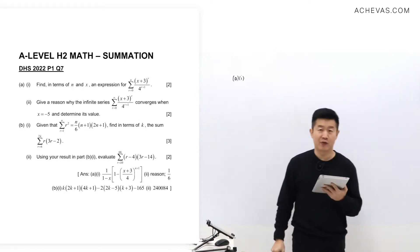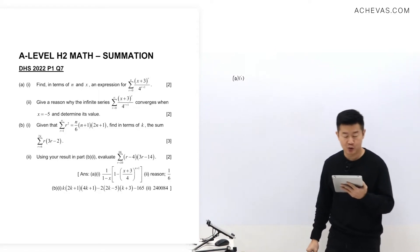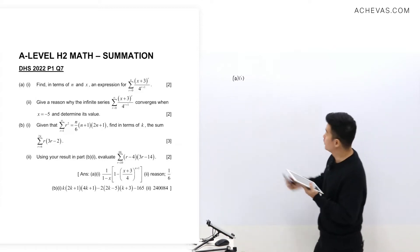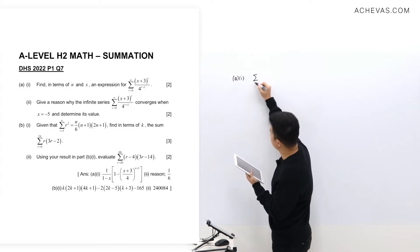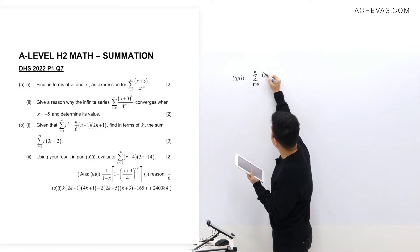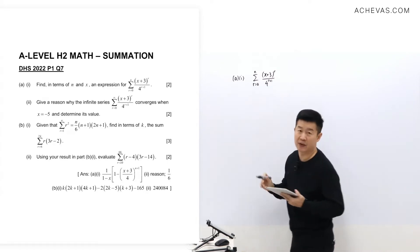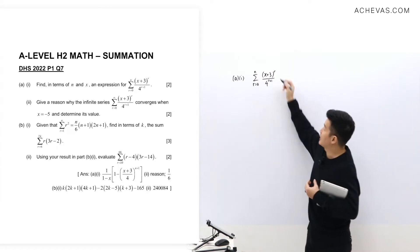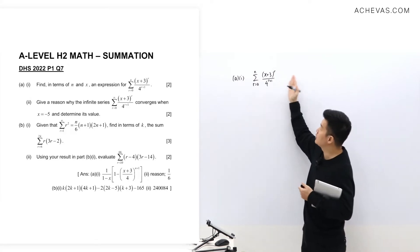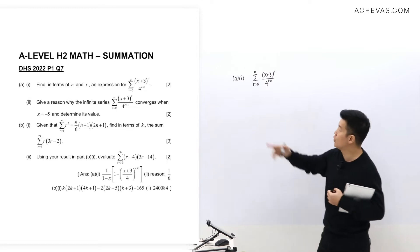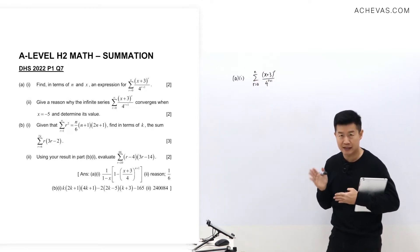The question we're looking at is from Dahmen Hai, year 2022. In Part A1, we are looking at a summation in sigma notation from r=0 to n of (x+3)^r divided by 4^(r+1). One thing to note is that within the sigma notation, r is the variable changing from 0 to n, while x remains constant.